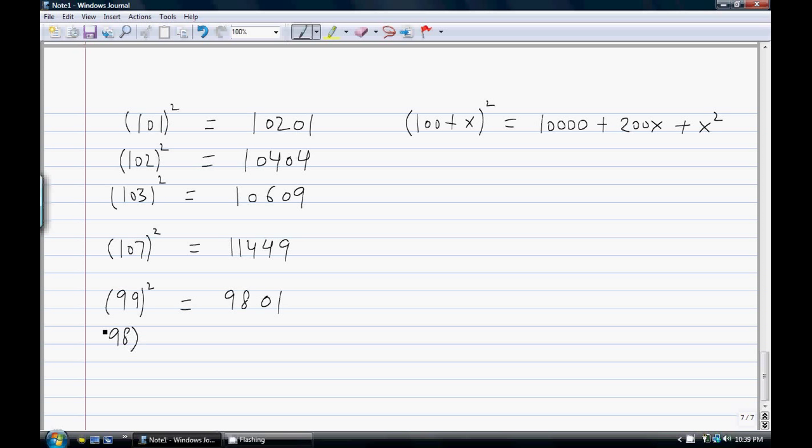Similarly, 98 square will be 9604, and 97 square is equal to 9409.